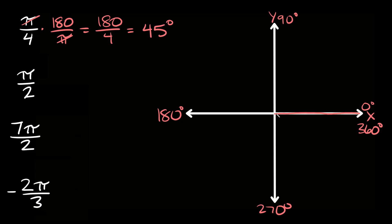So that means 45 degrees would be exactly between 0 and 90. So then we know that this angle π/4 looks something like that.